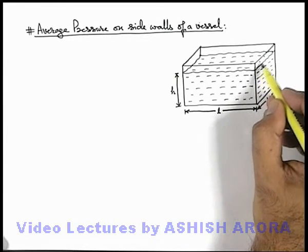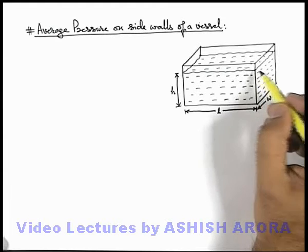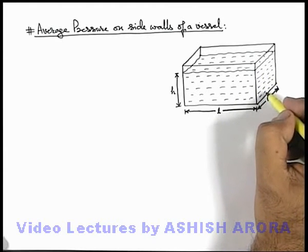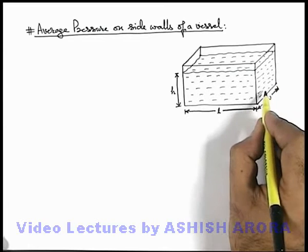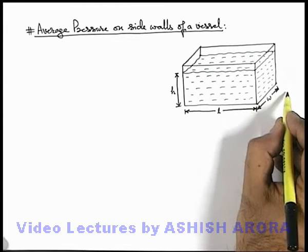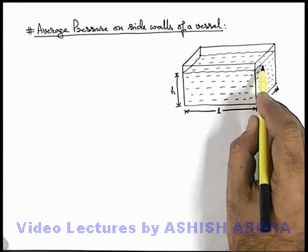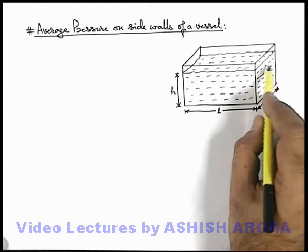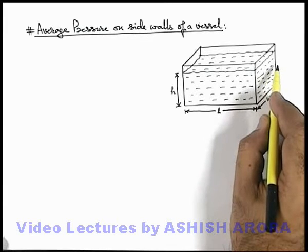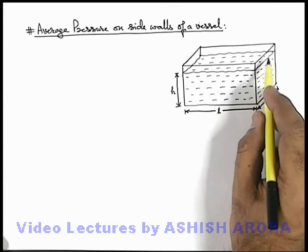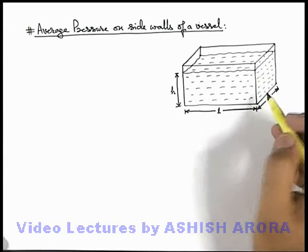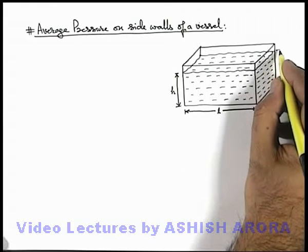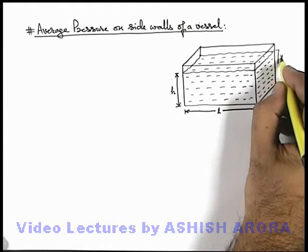If we wish to find out the average pressure exerted by the liquid on the side wall, we know that at the bottom pressure is more as depth is more, so the liquid pushes the wall outward with more force. At the top, the depth is less, so it pushes with lesser force. To find the total force acting on this wall, we consider, from the free surface, a depth y.